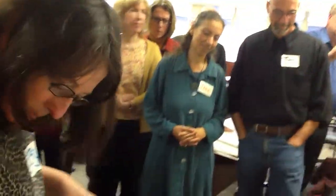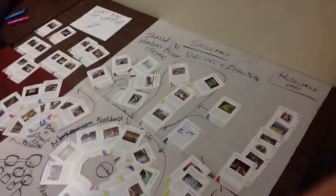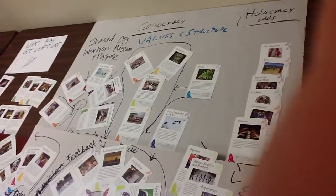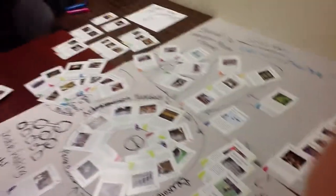Tom and I are both interested in this method — sometimes now called dynamic governance. It's a method of organizing through circles-based structure, covering both organizational structure and decision-making process. Its inspiration comes from systems engineering and systems thinking, and it was designed drawing on Quaker process for seeking and finding unity, giving everyone a voice.